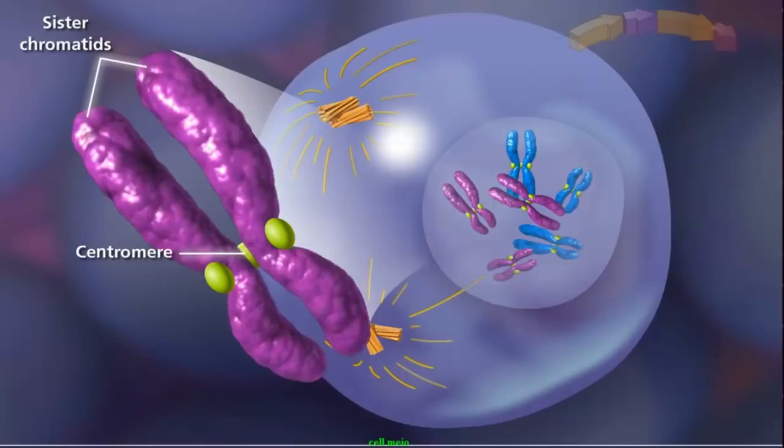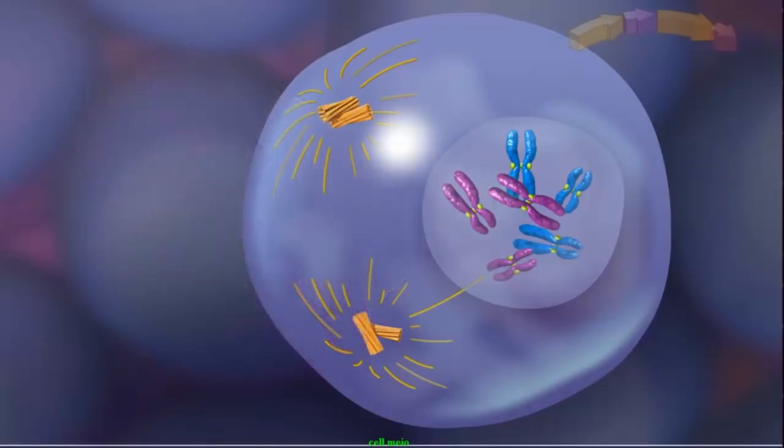Up to this point, the cell looks similar to mitosis, but two events occur in meiosis that do not occur in mitosis and lead to genetic diversity.